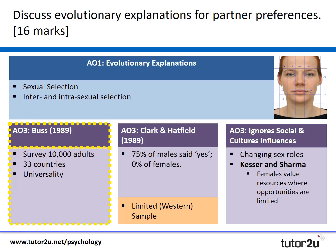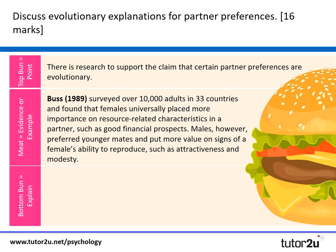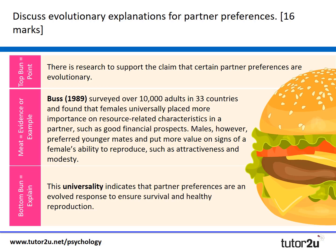Now let's consider our evaluation, starting with a simple yet effective paragraph crafted around the Buss study. There is research to support the claim that certain partner preferences are evolutionary. Buss surveyed 10,000 adults in 33 countries and found that females universally placed more importance on resource-related characteristics in a partner, such as good financial prospects, while males preferred younger mates and put more value on signs of a female's ability to reproduce, such as attractiveness and modesty. This universality indicates that partner preferences might be an evolved response to ensure survival and healthy reproduction.